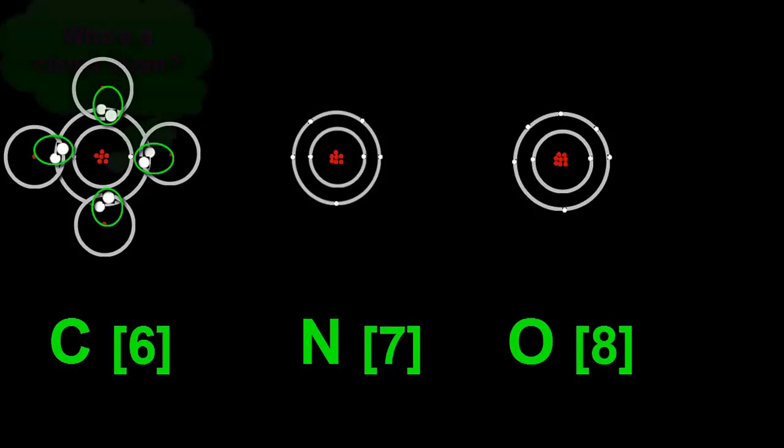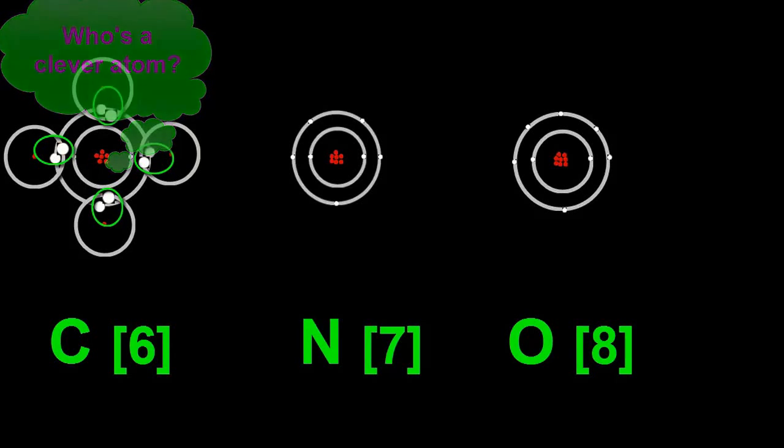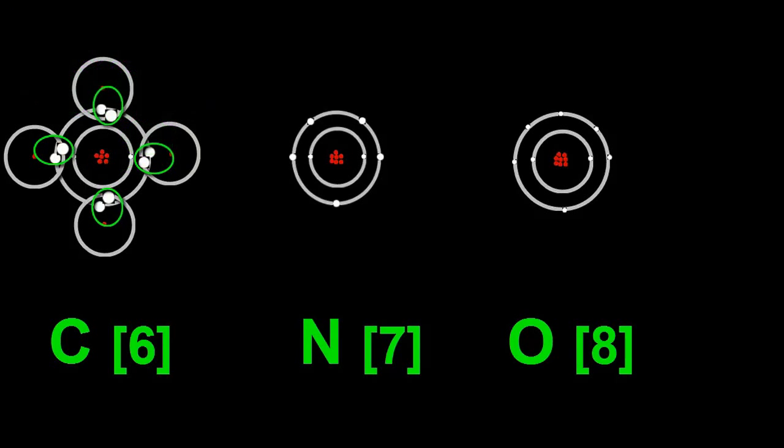Pretty clever, huh? Nitrogen has five valence electrons and needs to share with only three electrons to fill its outer shell. So it bonds with three Hydrogens.